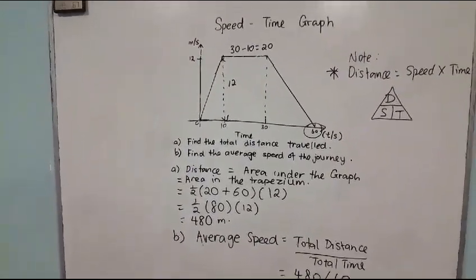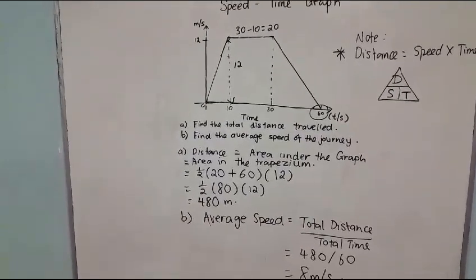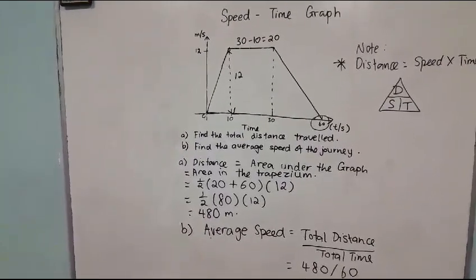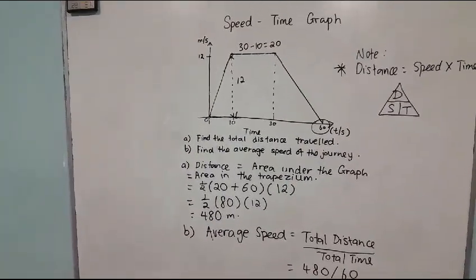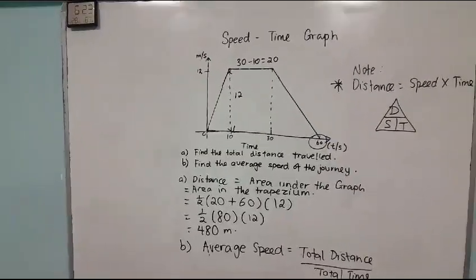Now, using the total distance over total time, which gives average speed, it is 480 divided by 60, which is the total time as shown. So it is 8 meters per second. This is how questions in speed-time graphs are solved. Thank you!